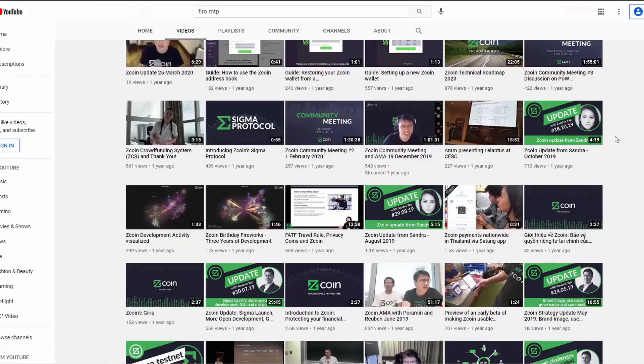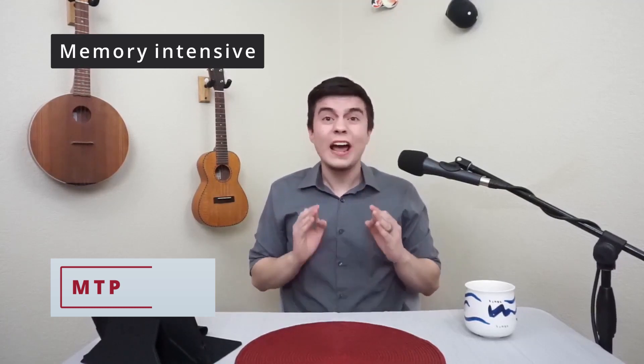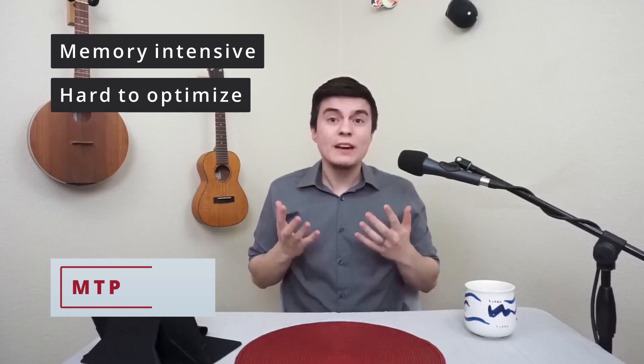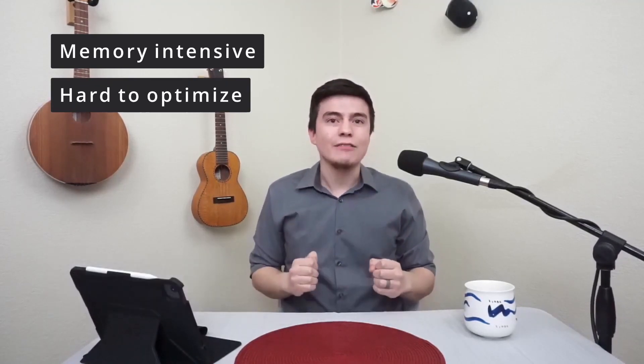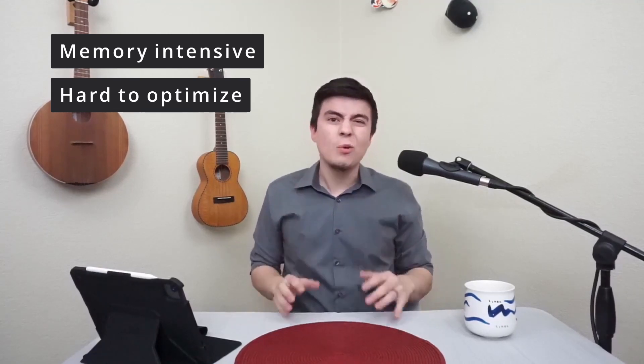In the December of 2018, Firo, known as Zcoin at the time, implemented MTP, or the Merkle Tree Protocol. There's another video on the Firo channel that explains MTP, but I'll be elaborating a little bit. The biggest quality of MTP is that it is memory intensive. The reasoning behind this is that such a memory-hard algorithm is hard to optimize, which lowers the extreme advantage that ASICs have. It has been a standard for private cryptocurrencies to use such algorithms for quite a while.